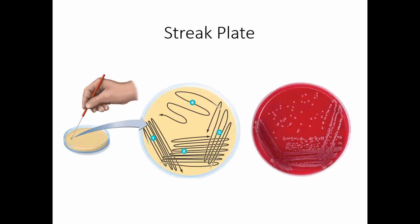The streak plate involves taking the inoculum and spreading it around on the surface of the agar. You usually sterilize your loop in between. The idea is that as you spread the inoculum around, you are separating those organisms out, and you eventually get individual cells that will grow into isolated colonies.